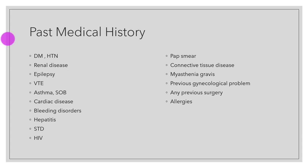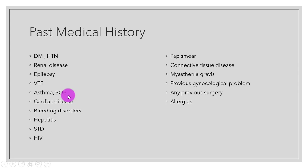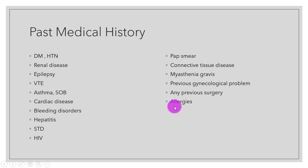In the past medical history, we focus on diabetes mellitus, hypertension, renal diseases, epilepsy, venous thromboembolism, asthma or shortness of breath, cardiac diseases, bleeding disorders, hepatitis, STDs, HIV, date of last pap smear, connective tissue diseases, myasthenia gravis, previous gynecological problems — whether she attended hospital or took home medications — any previous surgeries, and allergies.